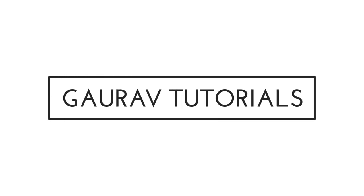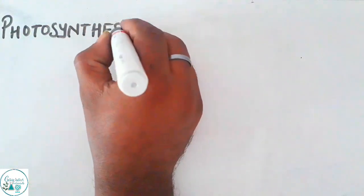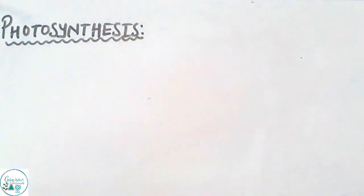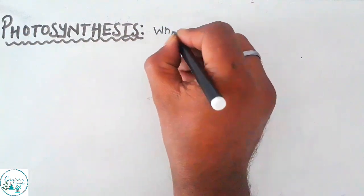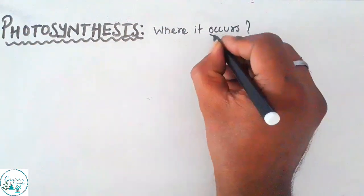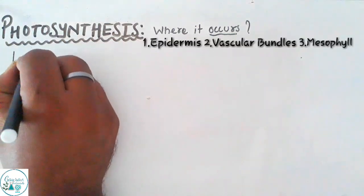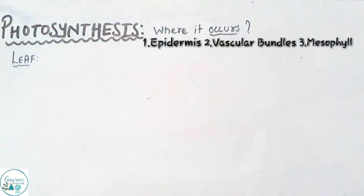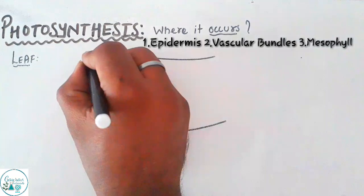Friends, welcome back to Goro Tutorials. This is the second video on lecture series photosynthesis. In this particular video of photosynthesis we would discuss about where the process of photosynthesis actually takes place, and the answer to all of us is very obvious: the green parts which is leaf and the herbaceous stem.